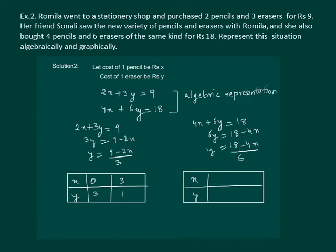For x equal to 0, y will be 3. If we take x equal to 3 we get 18 minus 12 whole by 6. So 6 by 6 is 1. So y comes out to be 1.